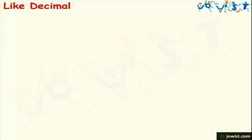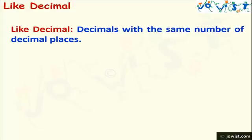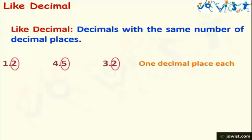Now, let's understand like decimals. What are like decimals? Like decimals are decimals with the same number of decimal places. The digits to the right of the decimal point are called decimal places. For example, we have three numbers: 1.2, 4.5, and 3.2. All these numbers have one decimal place, so they are called like decimals.